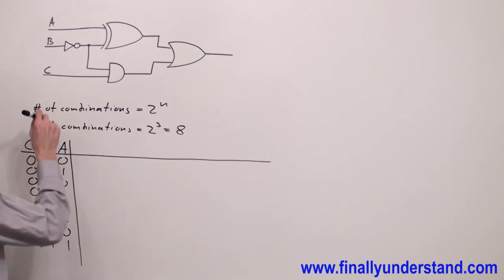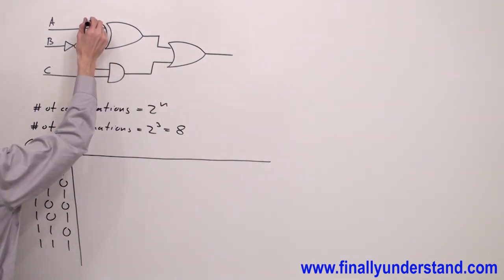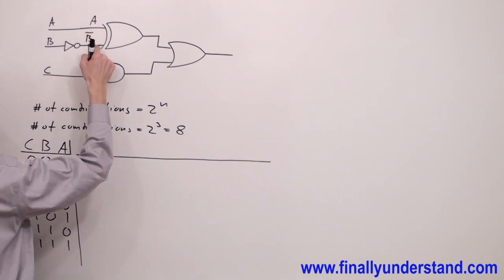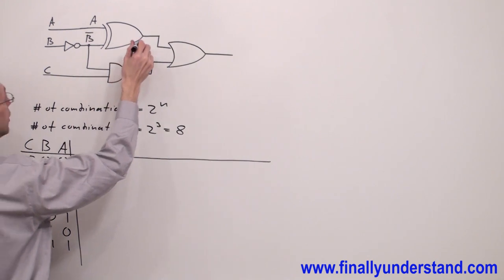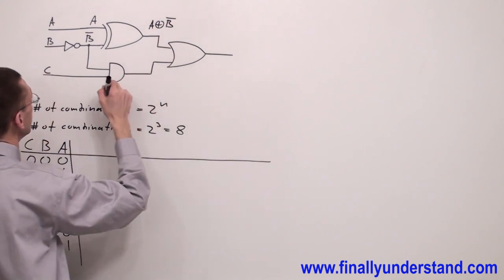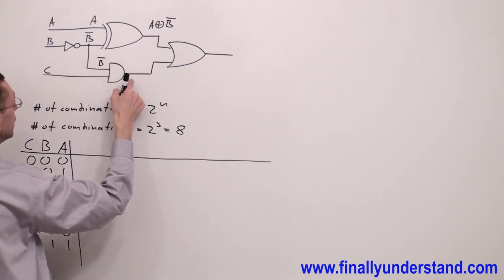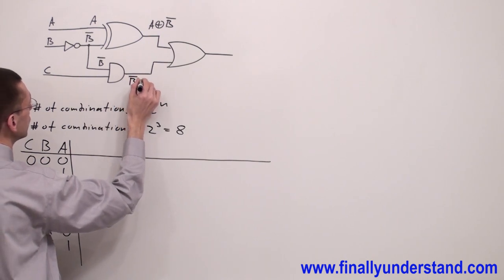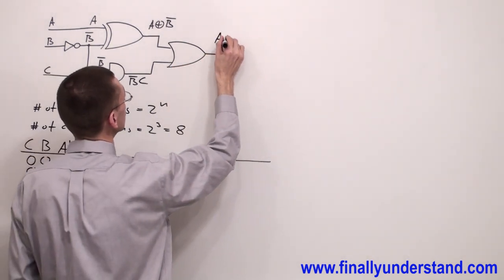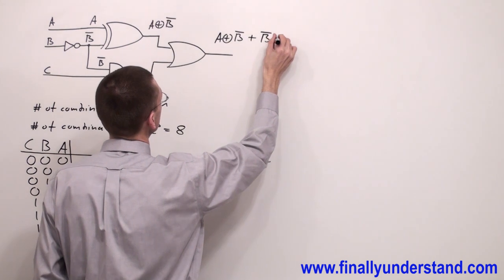Next, we're supposed to find the output function of this circuit. I have A over here. I have a B inverter, giving me B'. This B' goes to my exclusive OR. At the output I'm going to have A exclusive OR B', OR B'C.